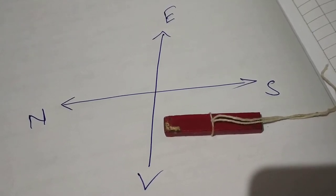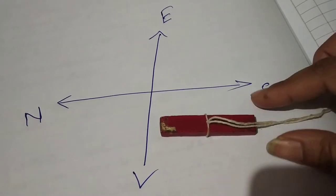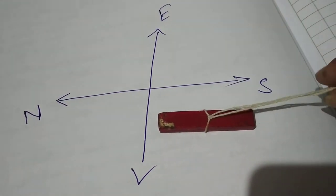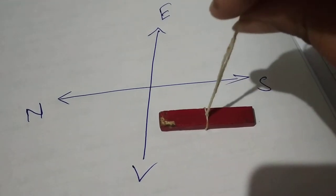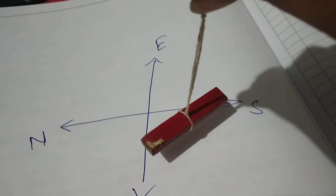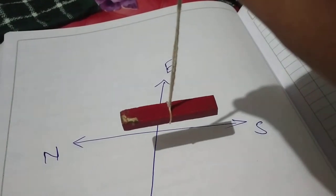Namaste students, today we are going to find the poles of a bar magnet using a thread. At first, I have tied the thread in between the bar magnet, and now I will try to suspend it over a particular height.